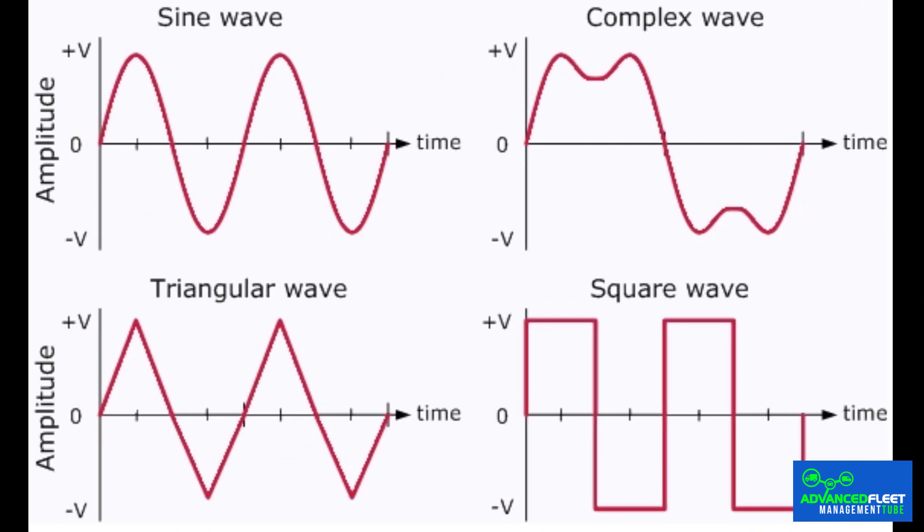Why is the waveform in alternating current important? Direct current electricity produces a very sharp square wave. In contrast, alternating current electricity generates a smoother sinusoidal waveform. This is important because electric car motors need time to increase and decrease power. That is why alternating current is more suitable for their operation.